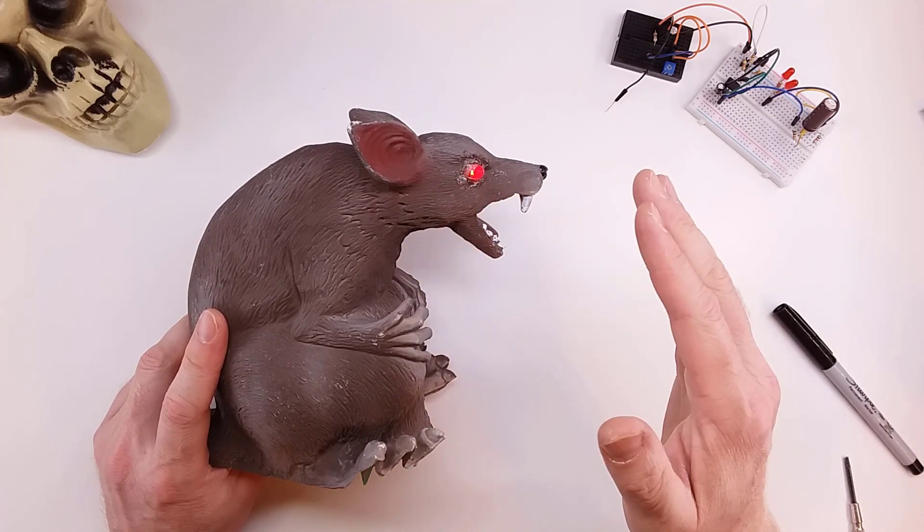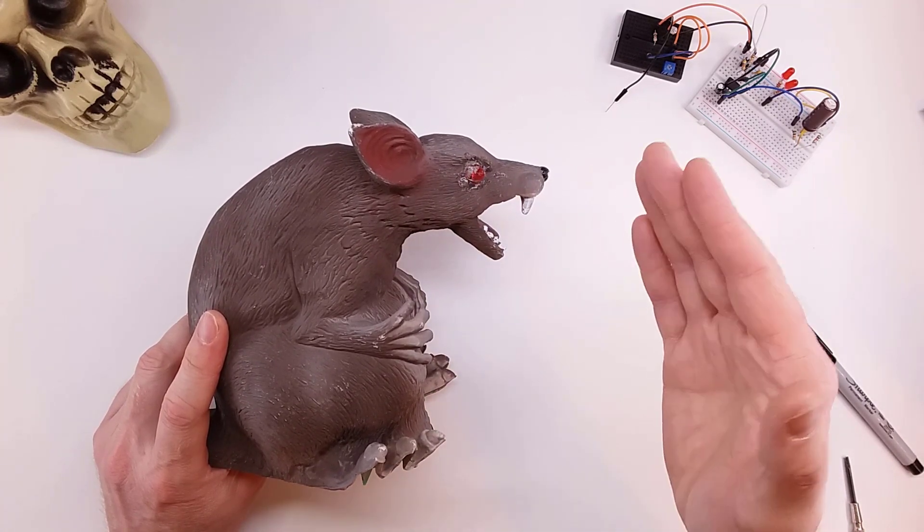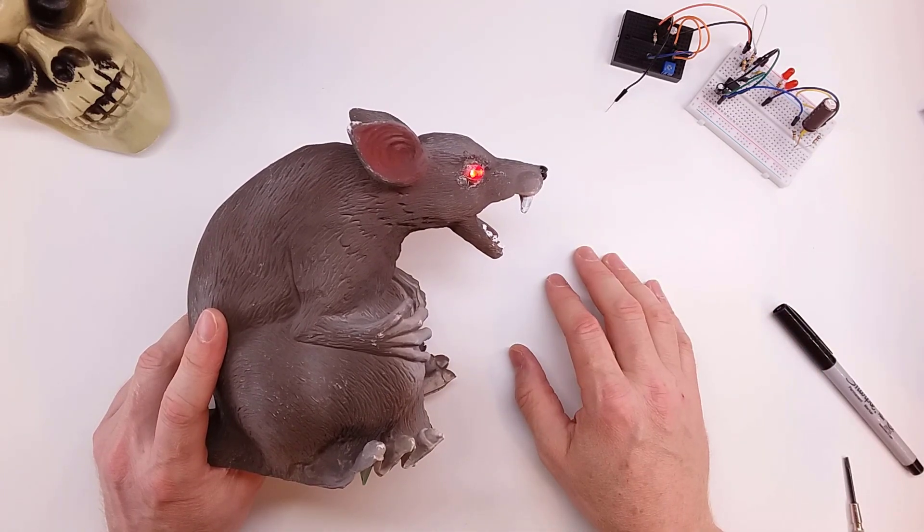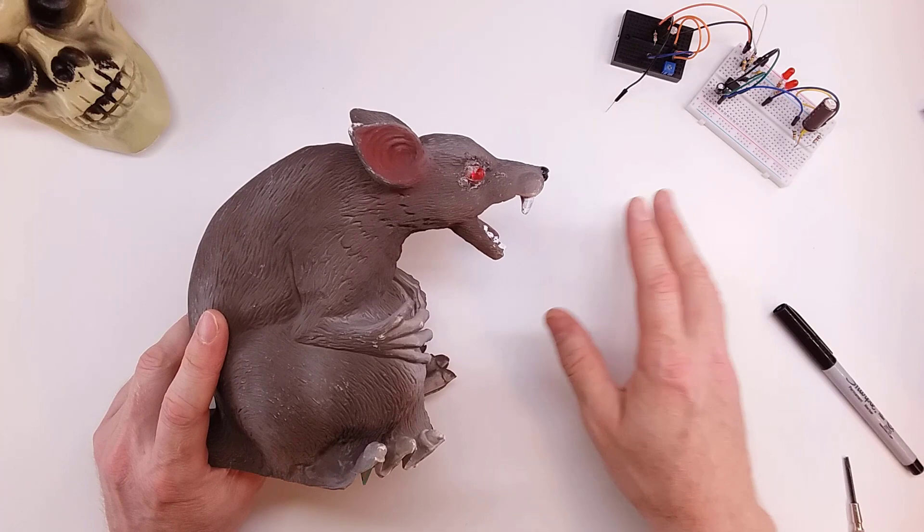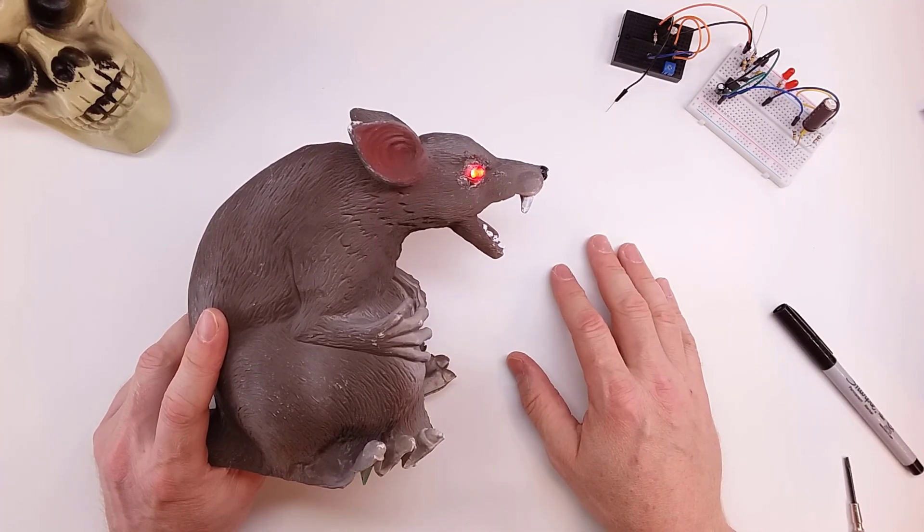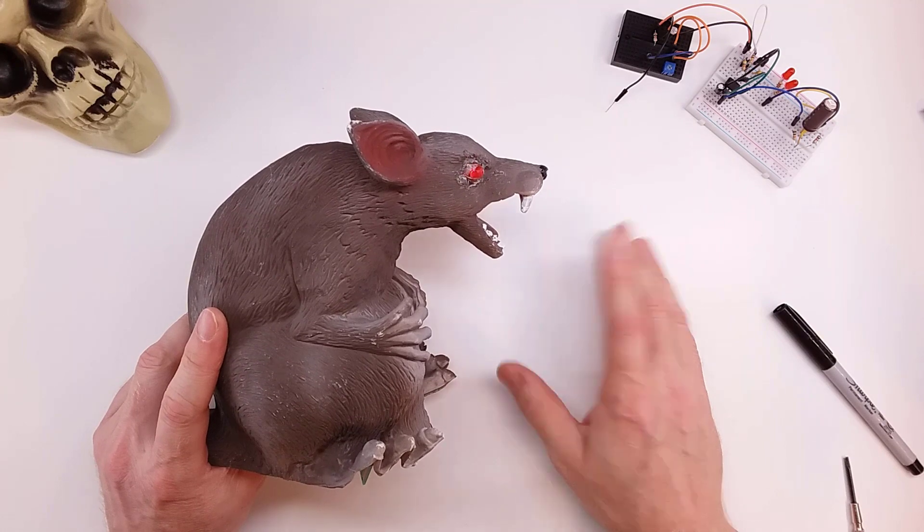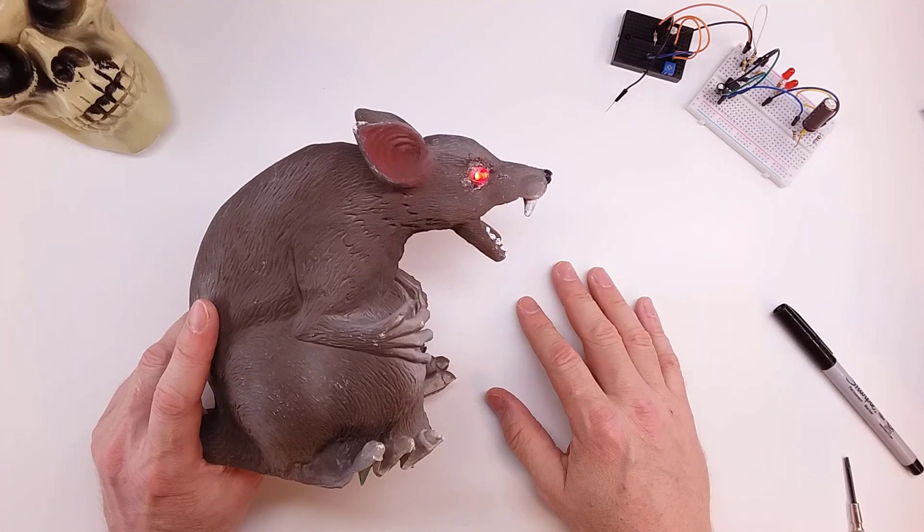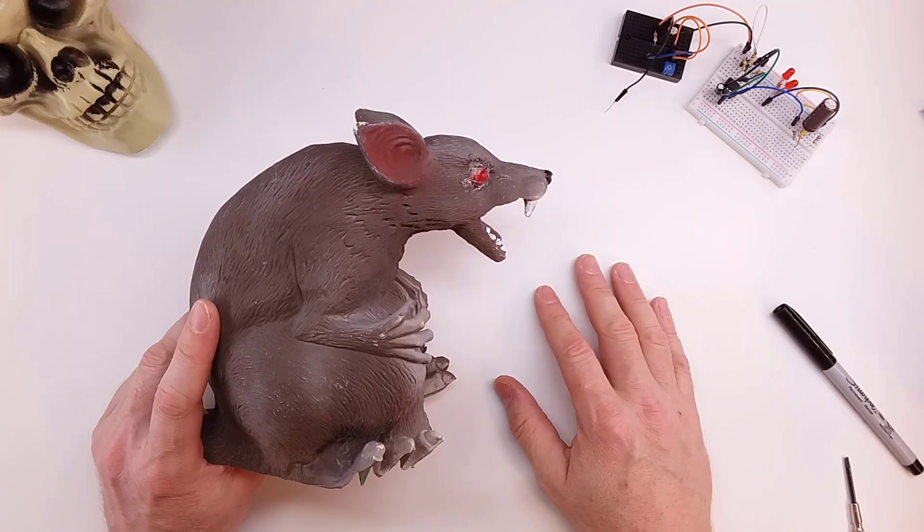You can see it slowly fades in, stays on for a brief second or two, and then fades back out again. And because we're using the 555 timer, you can actually adjust how long that cycle takes throughout. And then we can also adjust some of the other capacitors and resistors to adjust the timing to be exactly what you might want for your particular prop.